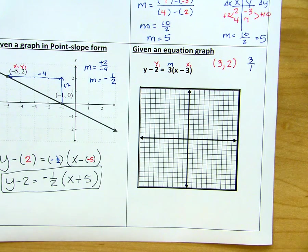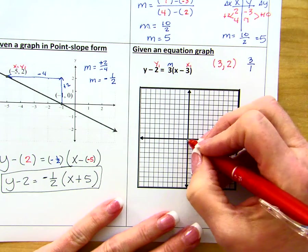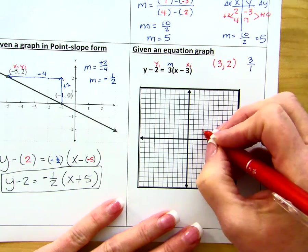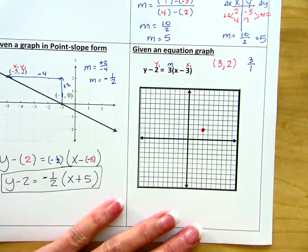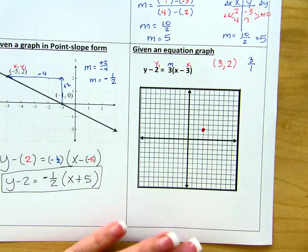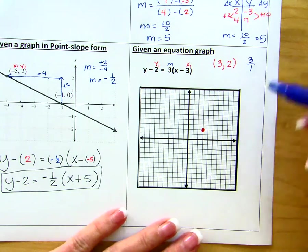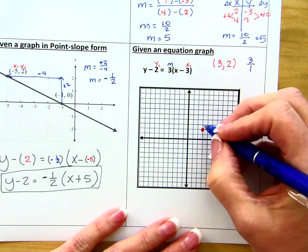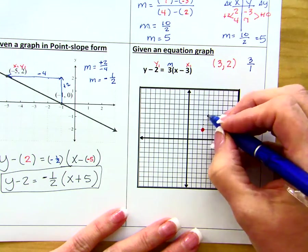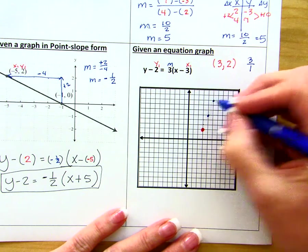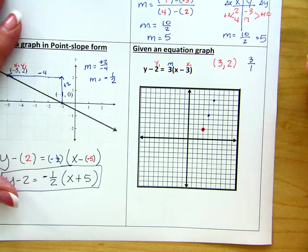So I'm going to go ahead and plot the point, because I can't use the slope until I have a point. So I'm going to go over 3 and up 2. And here's my point. And from there, what I'm going to do is graph more points using the slope. So I'll go up 3, 1, 2, 3, over 1. Up 3, over 1. That's as far as I can go on this graph.